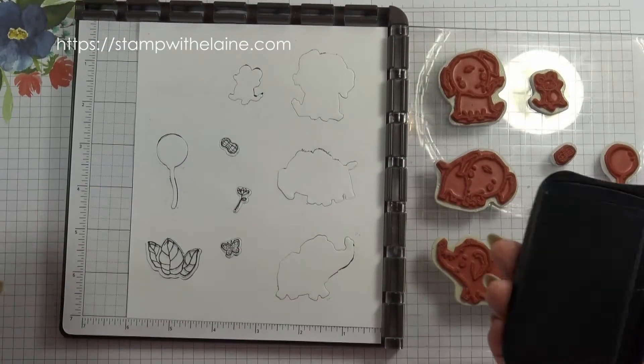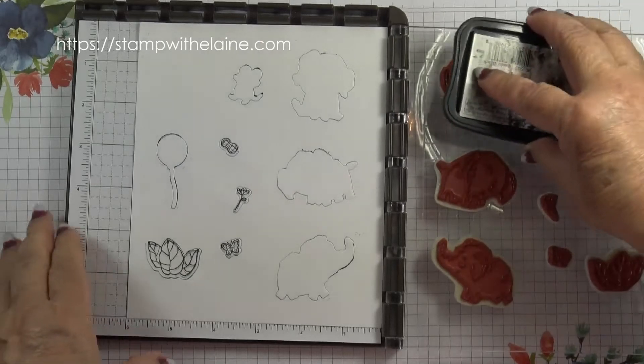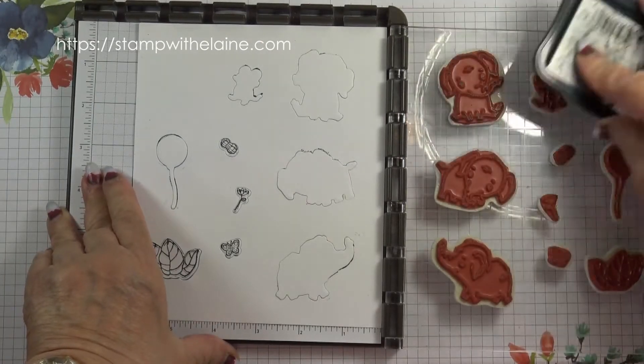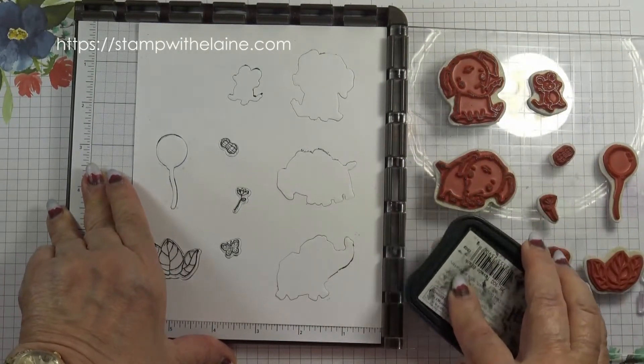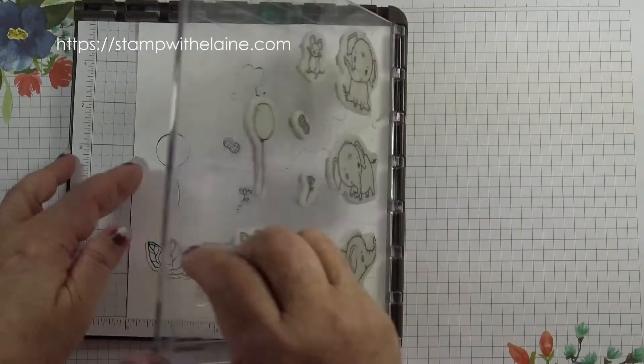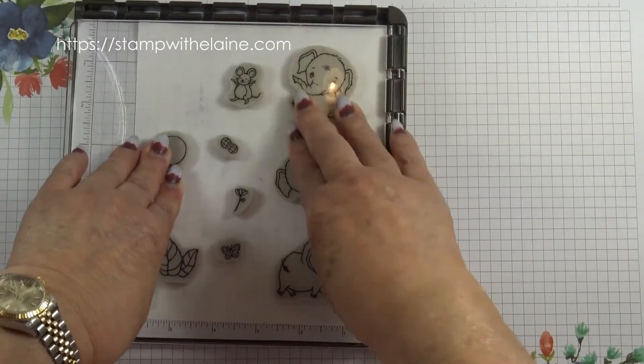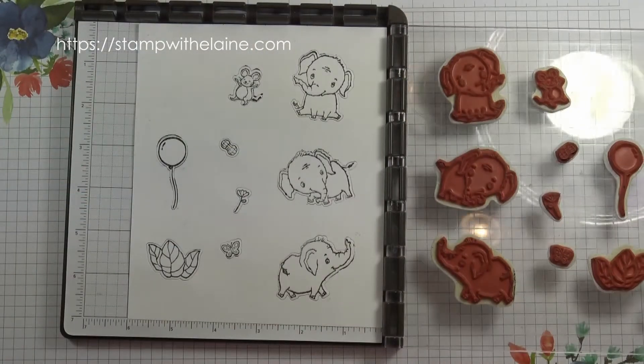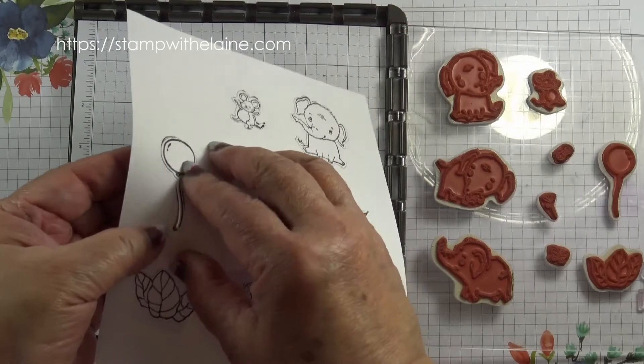So to begin with you'll need tuxedo black memento ink, so I'm going to ink all this up and stamp the blanks and then you can remove them all.